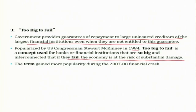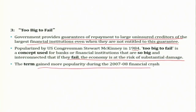Too big to fail refers to banks or financial institutions so big and interconnected that if they fail, the economy is at risk of substantial damage — eventually leading to a financial crisis and then economic recession. There is a general perception among the public and financial institutions that large financial institutions, even if they engage in lots of adverse selection and moral hazard behavior, will not be allowed to fail. Because if they fail, the entire financial system collapses, leading to economic recession: increased unemployment, decline in GDP, decline in government revenue. This term gained more popularity during the 2007-8 financial crisis.